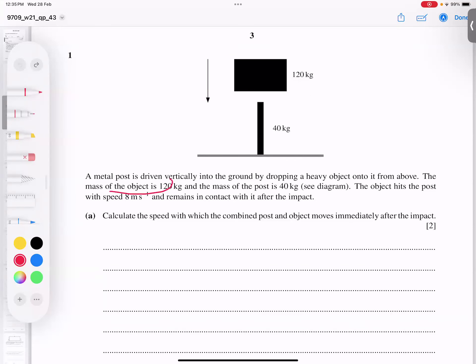The mass of the object is 120 kg and mass of the post is 40 kilograms. The object hits the post with a speed of 8 m/s. So we can say this is behaving as two particles. One particle is coming with a speed of 8, and the second is at rest. So U2 equals 0. This is the idea before collision.